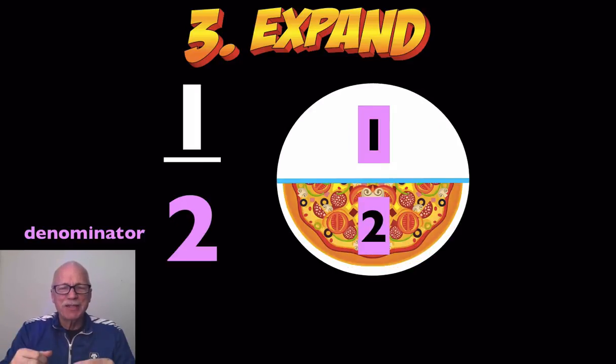Look at the pizza. That pizza originally had two parts in the whole. The denominator showed you all the parts that were there in the whole. Denominator. All the parts in the whole.